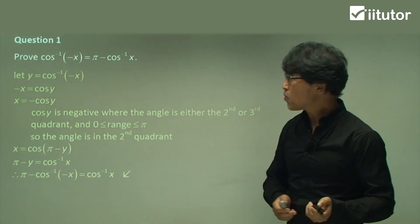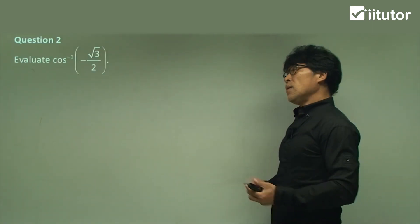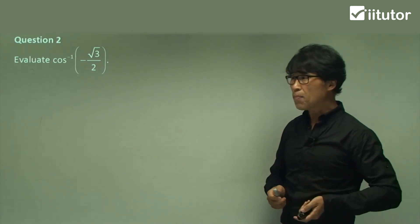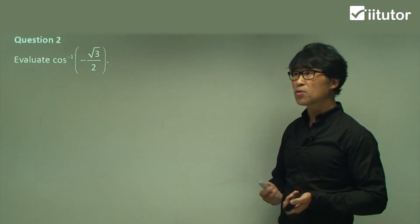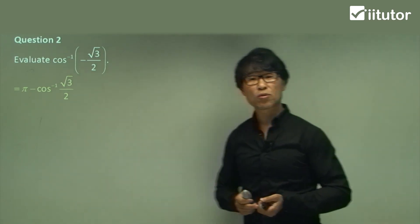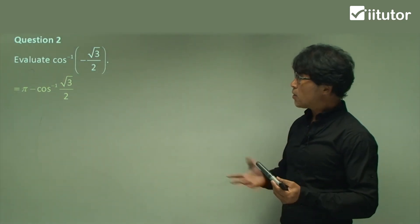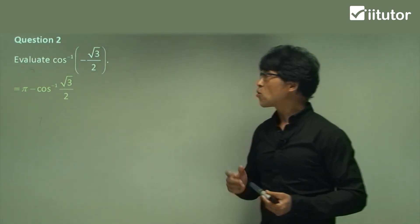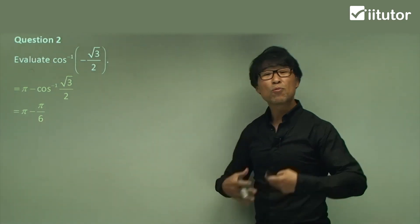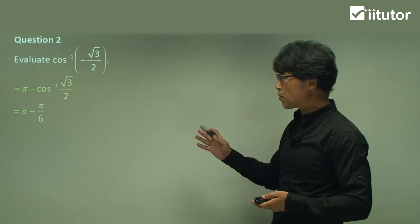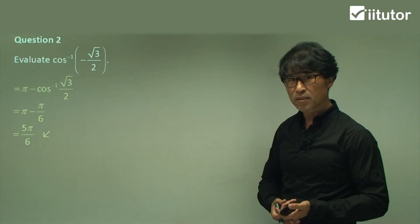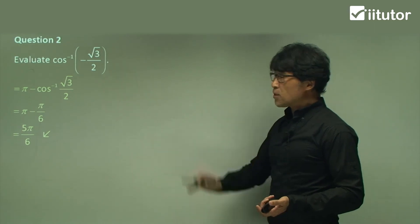That's Question 1. Moving on to Question 2, we need to evaluate cos⁻¹(-√3/2). Since there is a negative, we follow the rule: π minus cos⁻¹(√3/2). What value makes cosine equal to √3/2? That is π/6, which is 60 degrees. But we need to stick to radian measurement for this topic. Doing simple evaluation gives us a final answer of 5π/6.